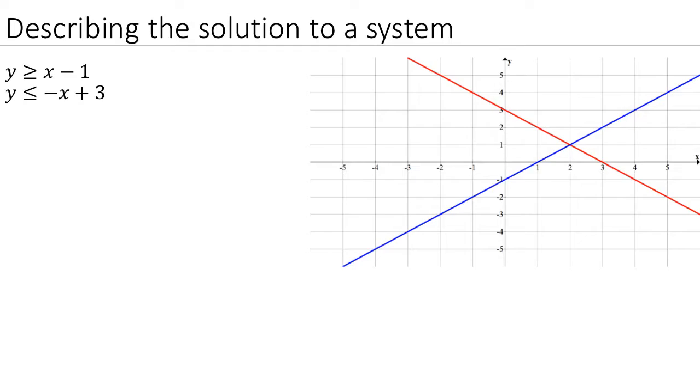In this case, I've already graphed the lines. The blue line is y equals x minus 1, and the red line is y equals negative x plus 3.